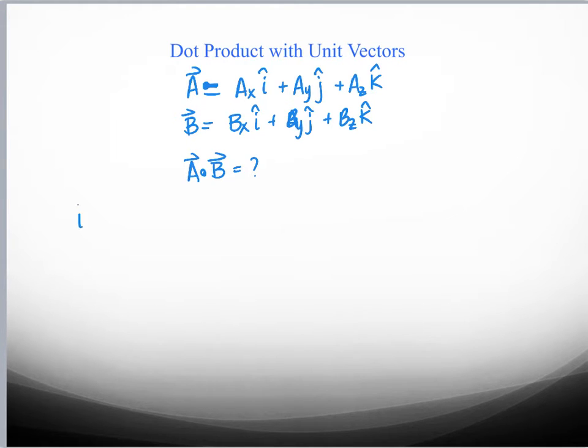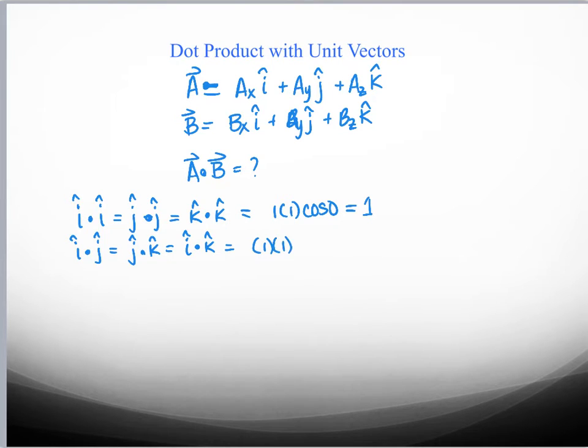What we can use to help us is the definition of the dot product and realize that when we take unit vectors times themselves, it's the same as taking one times one times the cosine of zero, which gives us a value of one. So if we take the dot product of any mixture of unit vectors, it's taking one times one times the cosine of 90, which is zero.